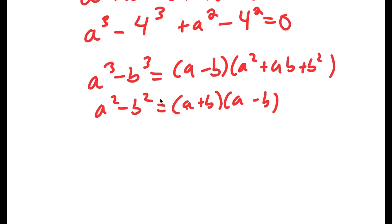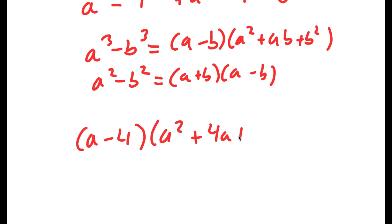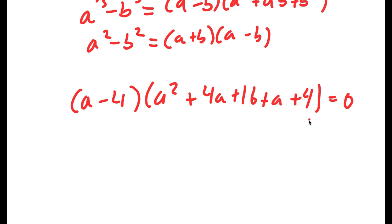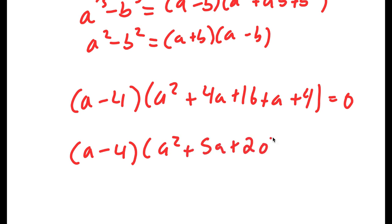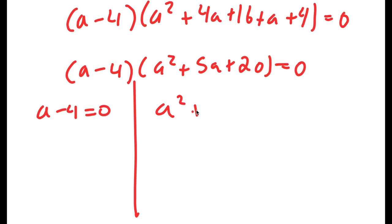Using those two properties, I end up with a minus 4 times a squared plus 4a plus 16 plus a plus 4 equals 0. This simplifies to a minus 4 times a squared plus 5a plus 20 equals 0. So now this gives me two equations: a minus 4 equals 0, and a squared plus 5a plus 20 equals 0.